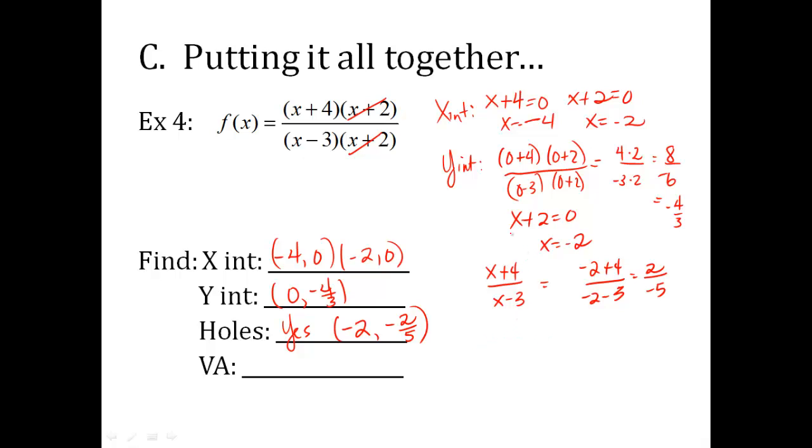Vertical asymptote. Set whatever's left in the denominator equal to zero. So x minus three equals zero, so x is three. So we have all these characteristics of our graph figured out: x intercepts, y intercepts, a hole, and a vertical asymptote. We'll be putting it all together on a graph very soon.